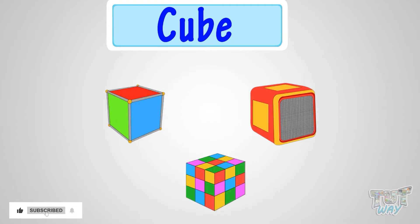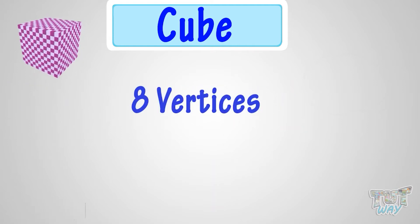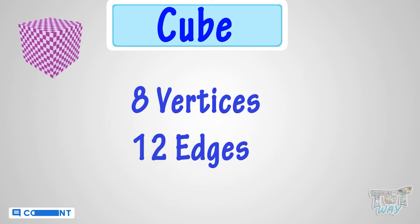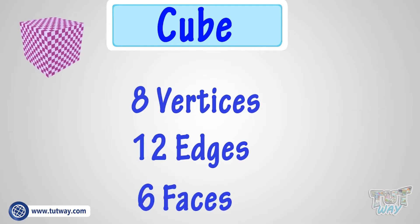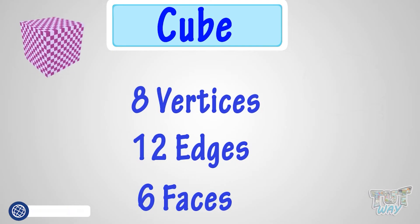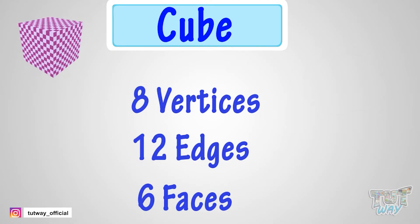So what have we learned? We have learned that a cube has 8 vertices, 12 edges which are all equal, and 6 faces which are all equal too and square in shape. Good!